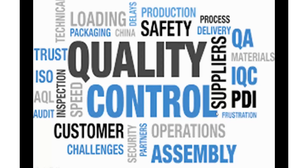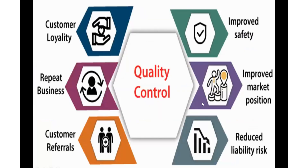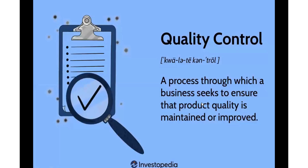Welcome to International College of Technical Education. Hope you all are doing good. Today we will be discussing quality control. The basic definition of quality control is a process through which a business seeks to ensure that product quality is maintained or improved. When an industry is making any product for its customers, the industry is focused on handling the quality of the product. When you go to the shop to buy something, you want the quality to be 100% effective for you.